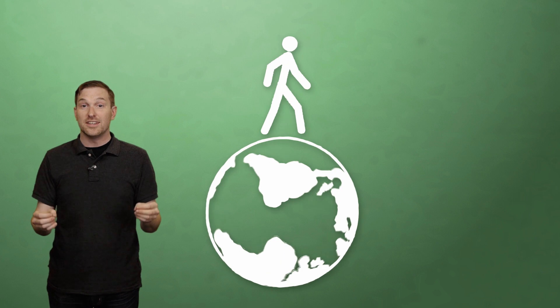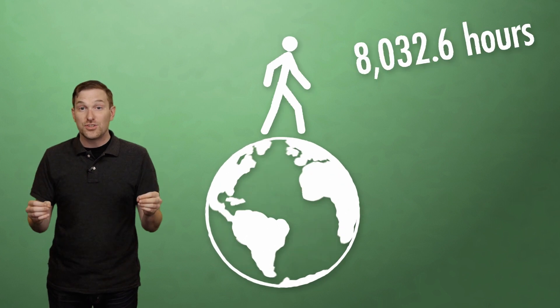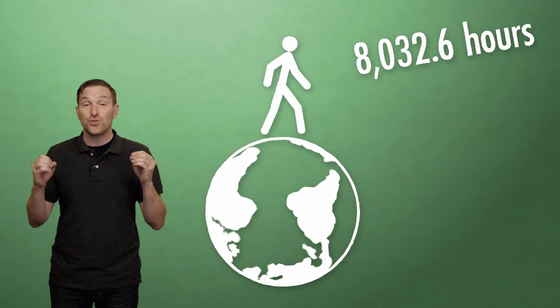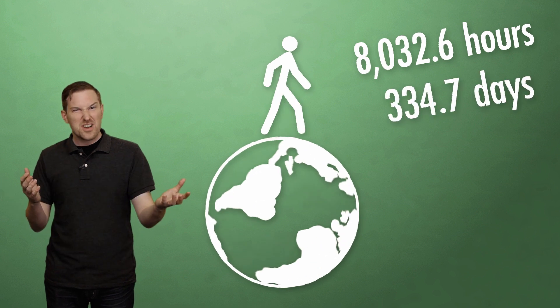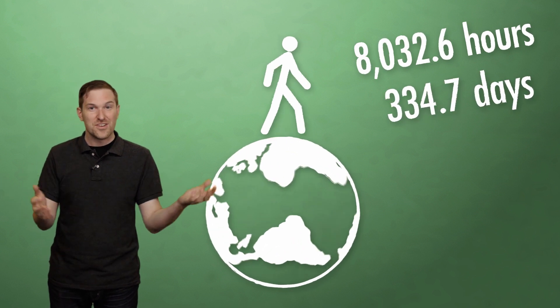With those numbers, if we never stop for anything, if we never go faster or slower than 3.1 miles per hour, if we somehow walk in a straight line, it will take us 8,032.6 hours to walk around the world. That's like 334 to 335 days. That's less than a year. Go us.